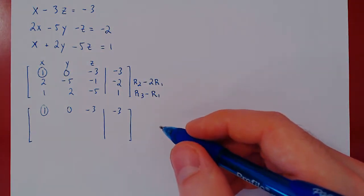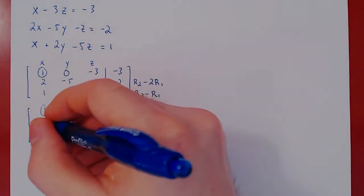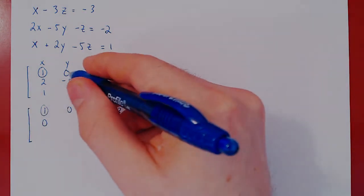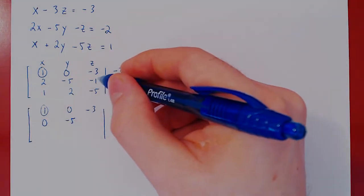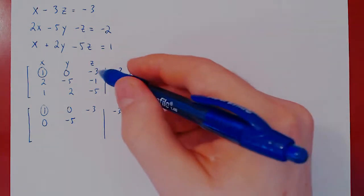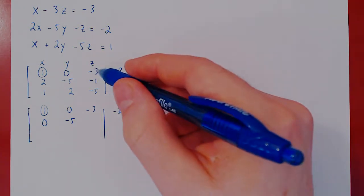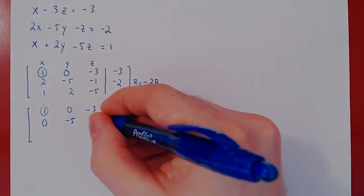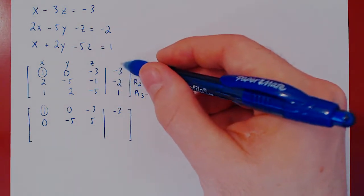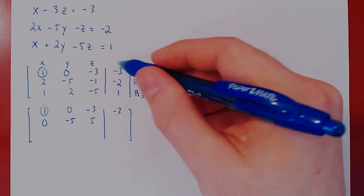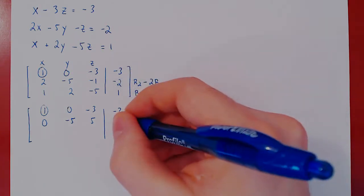Let's apply the two row operations. 2 minus 2 is 0. Negative 5 minus 0, negative 5. Negative 1, negative 2 times negative 3 is plus 6. 6 minus 1 is positive 5. Negative 2, negative 2 times negative 3 is again plus 6. 6 minus 2, positive 4.